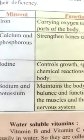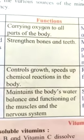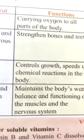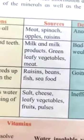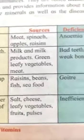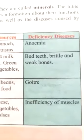Iodine controls growth and speeds up the chemical reactions in the body. Sources: raisins, beans, fish and seafood. Deficiency disease: goiter.